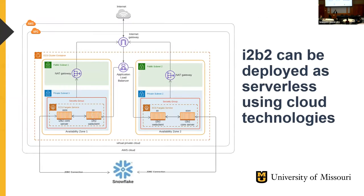In our last presentation we demonstrated that I2B2 can be deployed as serverless using cloud technologies. We can have servers like the web client and web server running in ECS Fargate serverless compute engine, with load balancers, and in our first deployment we had our database installed in AWS RDS, which handles all the database administration tasks.